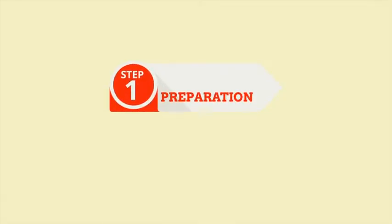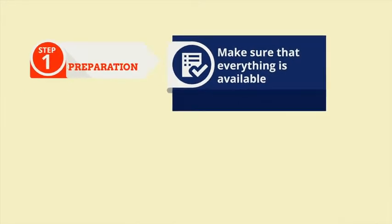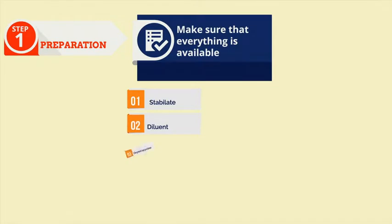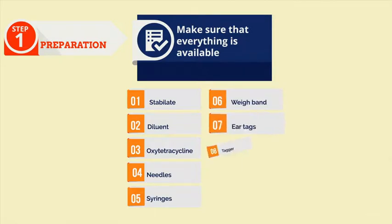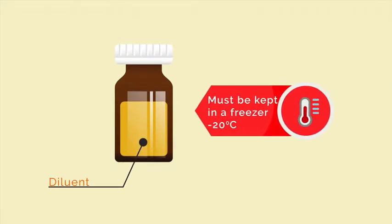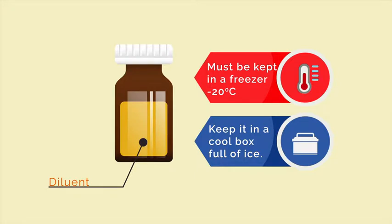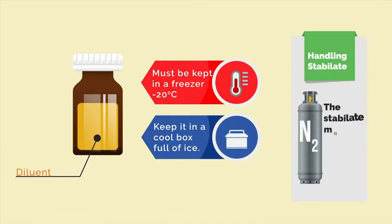Step 1: Preparation. Make sure that everything is available. These include stabulate, diluent, oxytetracycline, needles, syringes, weigh band, ear tags, tagger, thermometers, ice, scissors, cool box, glass slides, and notebooks. The diluent must be kept in a freezer at negative 20 degrees centigrade. Remove the diluent from the freezer and keep it in a cool box full of ice. The stabulate must be kept in liquid nitrogen until use.